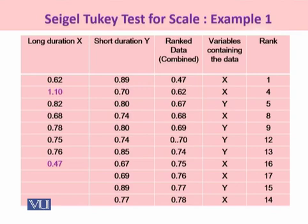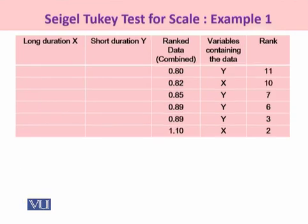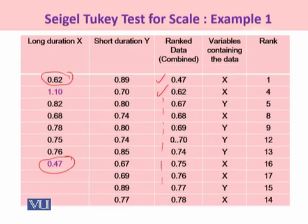To assign combined ranks, we rank the combined data. Going through the x and y samples, the most minimum value lies with x and it is 0.47, so the first rank is assigned to 0.47. Then we move on; the next value is 0.62, again lying with the x sample. We keep on assigning combined ranks to x and y, and finally we come up to the largest value 1.10, which again is present in the x sample. Once we are done with the entire ranking of both samples x and y, we identify which particular rank was assigned to which observation and which sample it belongs to.